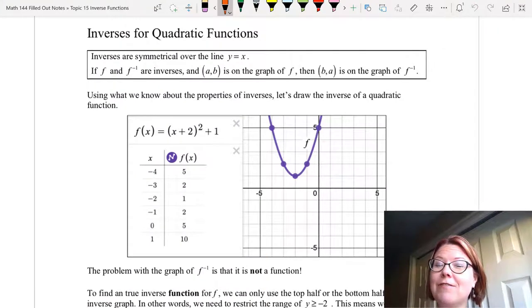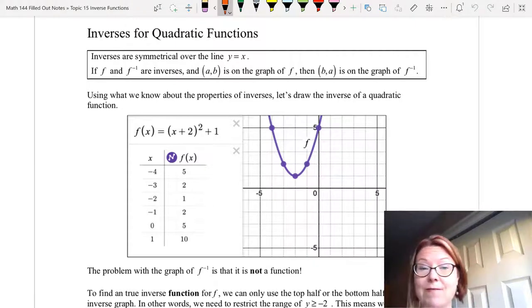In this video I want to talk about inverses for quadratic functions because these are kind of a special case. Now we know already that inverses are symmetrical over the line y equals x, and we know that if f and f inverse are in fact inverses and a comma b is on the graph of f, then b comma a is on the graph of f inverse.